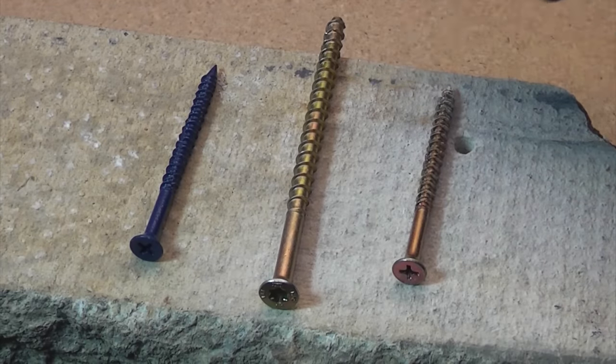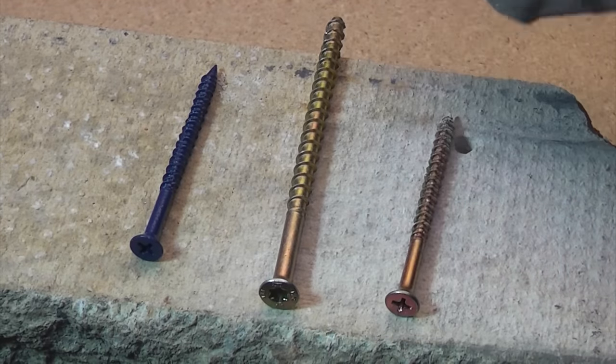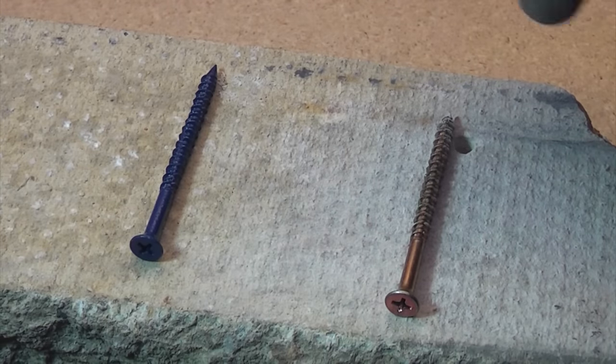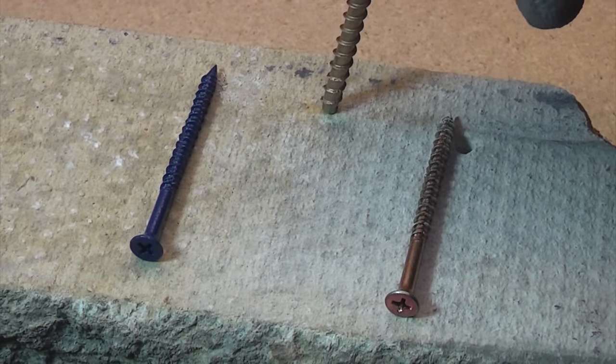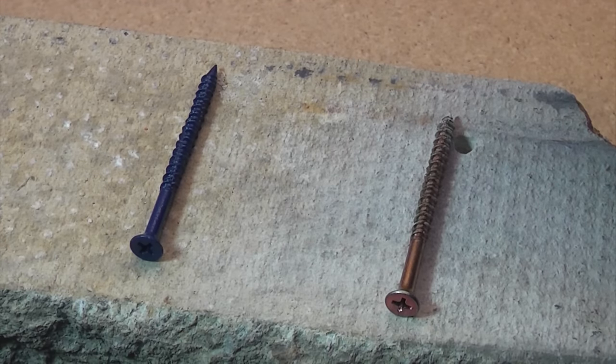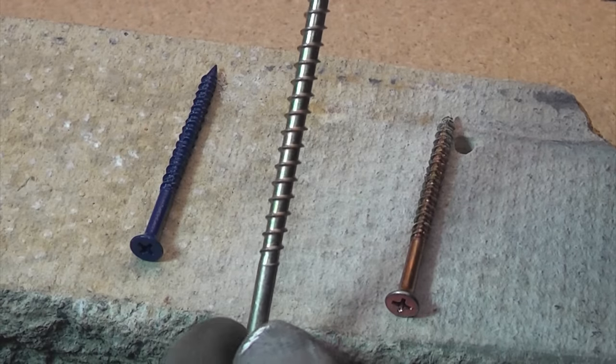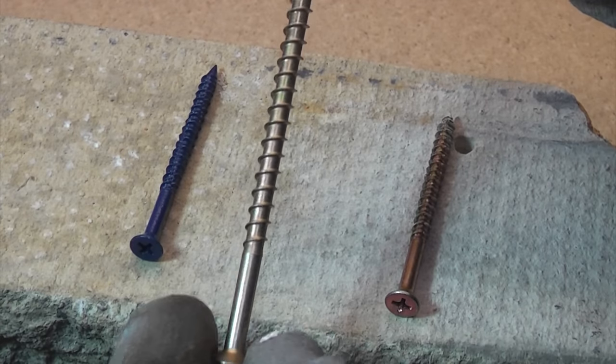These are masonry screws, and if you've never used them before, they're really useful. You can actually fix directly to masonry such as concrete, stone, or brick without using any plugs whatsoever. These are designed to cut a thread in the material, and they are extremely tough.